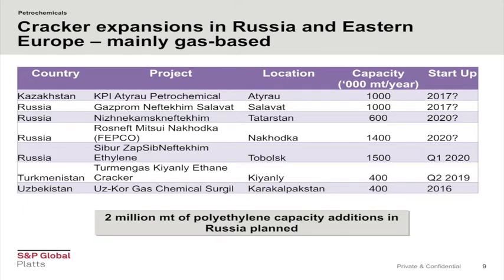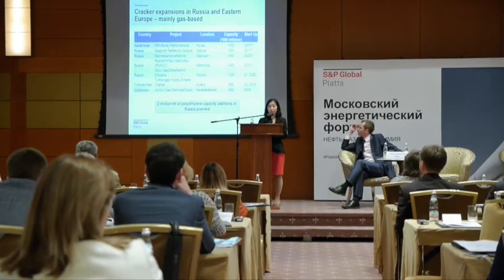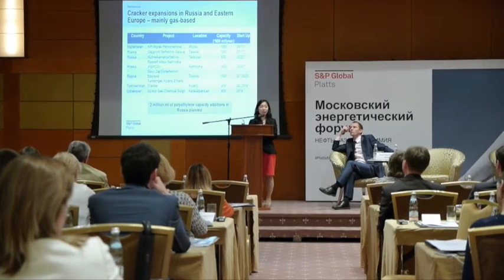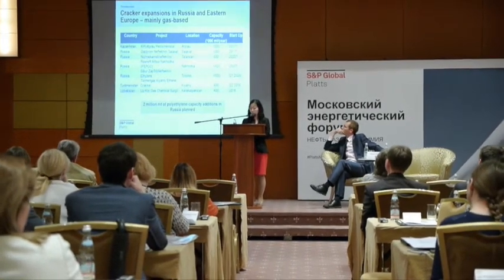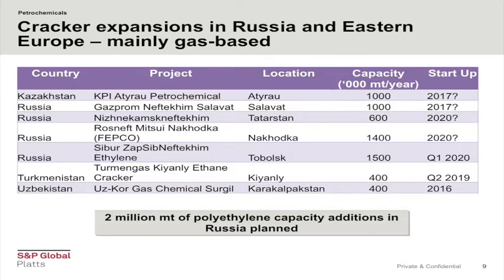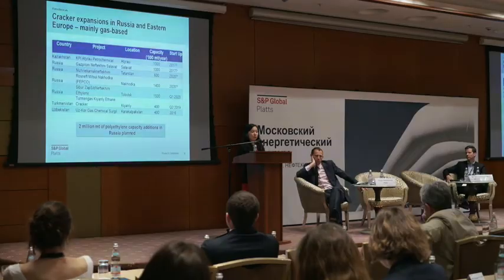It is very costly and complex to build a cracker. The strategy for Russian companies is to move down the value chain and build more downstream polymer capacity, so the industry becomes more self-sufficient in polymers — where the value is — and less reliant on imports. If all the cracker capacity listed here comes on stream, we can expect about two million metric tons of new polymer capacity in Russia in the next few years. Despite all these gas-based cracker expansions in Russia and around the world, it's important to remember that the competitive edge producers had by using natural gas no longer exists due to lower crude oil prices.